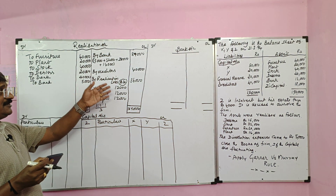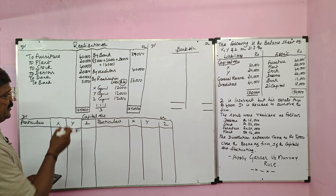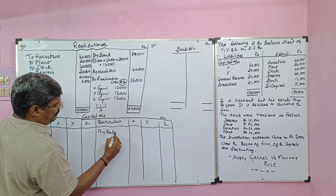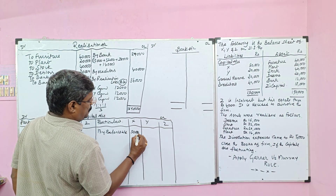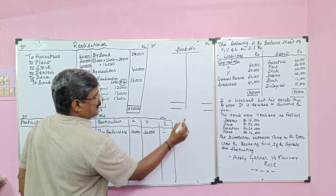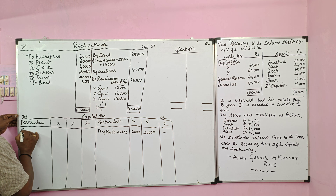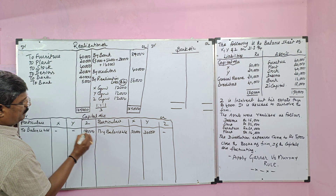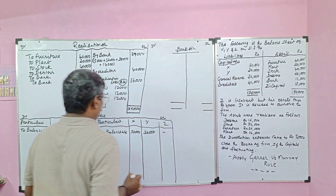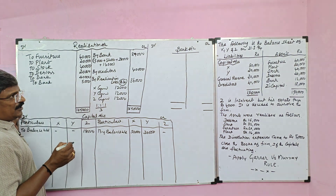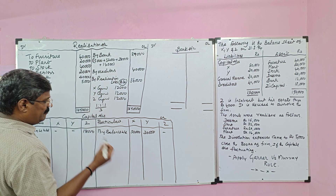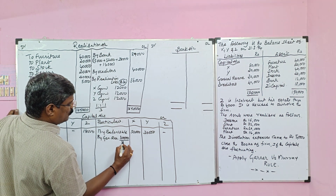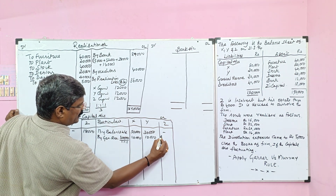Now we have prepared the realization account and found realization loss transferred to partners in old ratio. Now we are going to prepare the capital account. We take the opening capital given in the balance sheet — X capital 50,000, Y capital 30,000. Z capital is recorded on the asset side so it will appear on the debit side. Then we should transfer general reserve to the partners' capital accounts. Entry: General Reserve Account debit to X capital, Y capital, and Z capital. Value 30,000 divided in old profit sharing ratio: 10,000 to X, 10,000 to Y, 10,000 to Z.